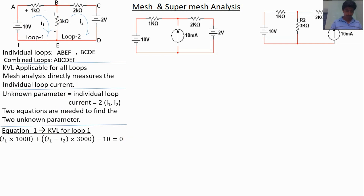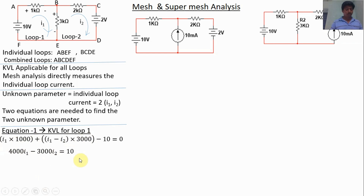Simplifying the equation: 1000·I1 plus 3000·I1 gives 4000·I1, minus 3000·I2 equals 10. This is equation 1. We need one more equation to find both unknown parameters.